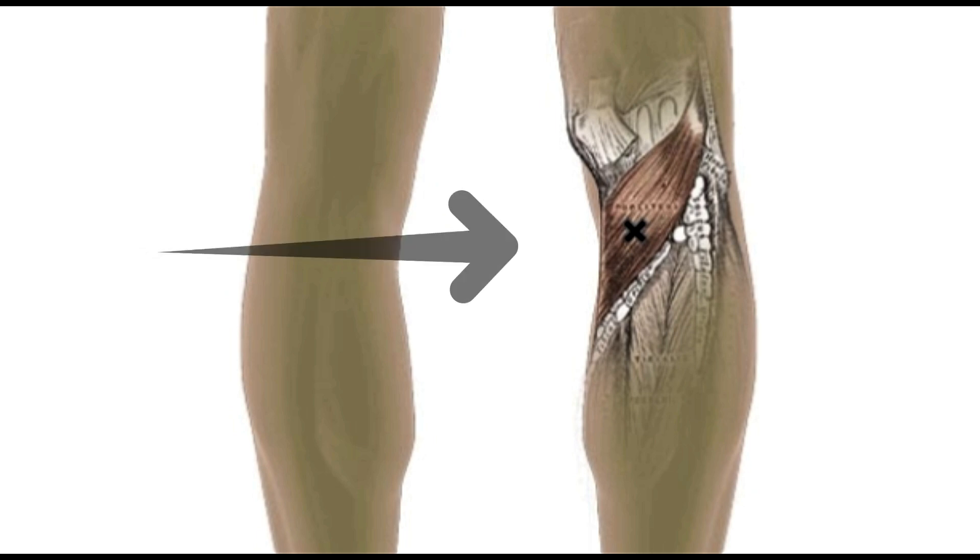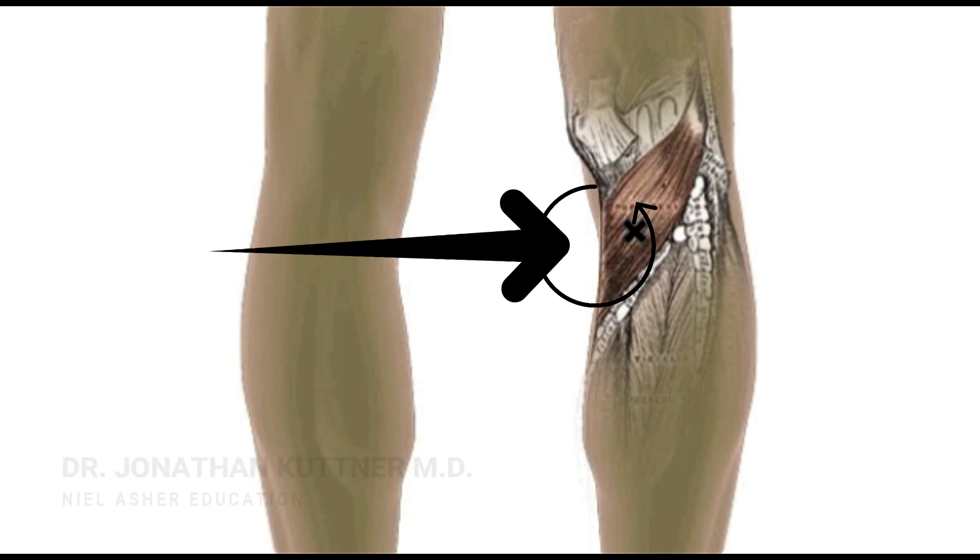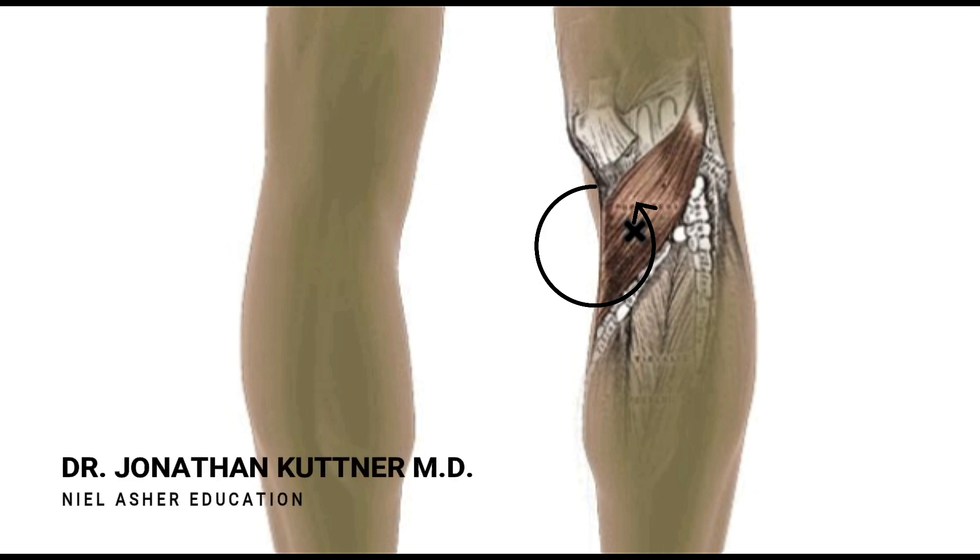The popliteus attaches here to the inner aspect of the top of the tibia and then it runs across the back of the knee and it attaches to the femur which is at the top of the knee.